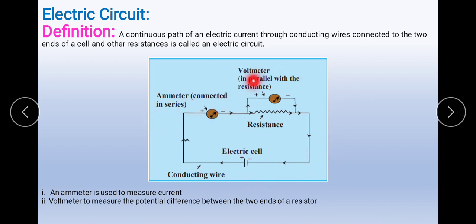You can see some components here — there is an electric cell over here. These are all the components which create an electric circuit. A continuous path of an electric current through connected wires to the two ends of a cell and other resistances is called an electric circuit.